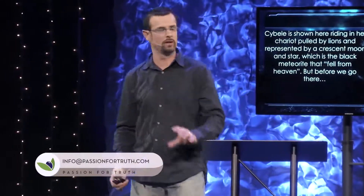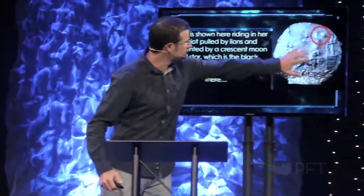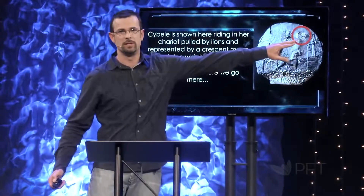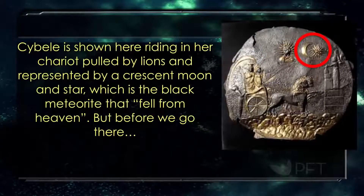There was something in the sky that alarmed me significantly, that sent me on a little rabbit trail. And this rabbit trail took me to a place that I really didn't want to go. I'm going to give you a close-up of this picture here. This is the moon and the star that shows up again on Ishtar's chariot.